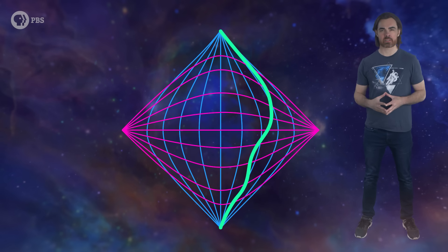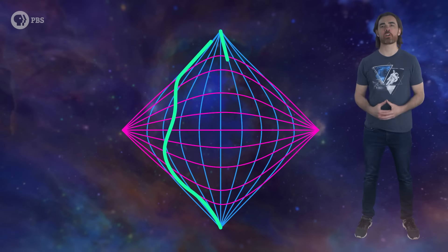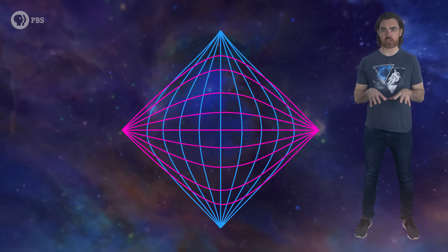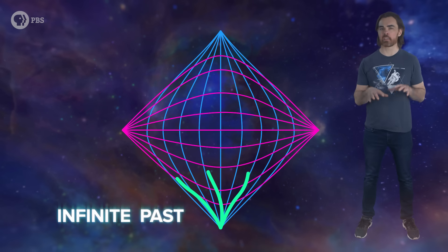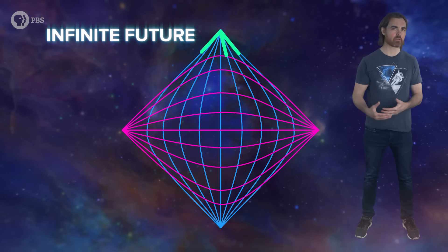Any sub-light-speed paths – which means paths of anything with mass – will be swept along with the contours of space. All matter must originate at this point representing all of space in the infinite past, and must also converge to this point, which represents all of space in the infinite future.